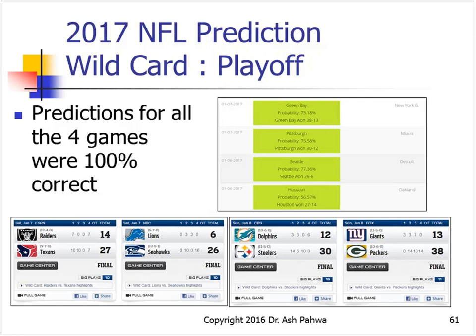This past wild card weekend, we were 100% correct. We published our predictions on our website: Green Bay was predicted to win with 73% probability — and they won 38-13. Pittsburgh Steelers were predicted to beat Miami — they won 30-12. Seattle was predicted to beat Detroit — they won 26-6. And we predicted Houston Texans would beat the Oakland Raiders — and they did. All four wild card predictions were correct.